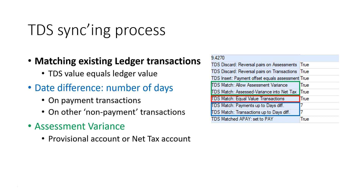A new TDS match setting called Allow Assessment Variance allows a TDS assessment transaction to match an identified ledger instalment even when the amounts differ. When set to true, any difference between the TDS transaction and ledger instalment results in a special assessment variance transaction being created.